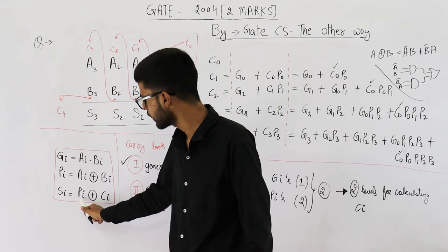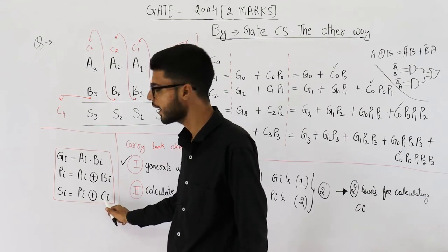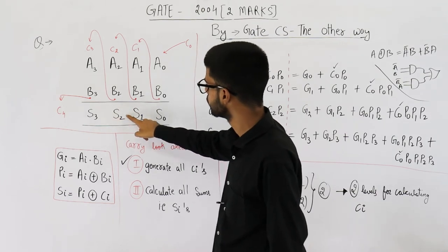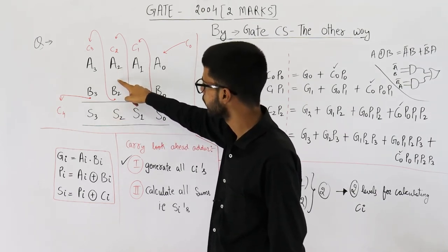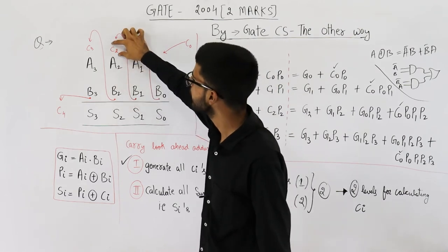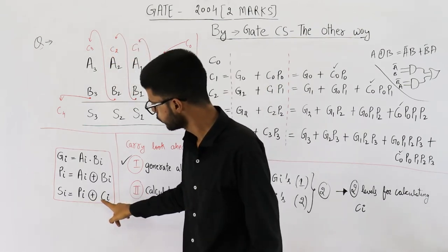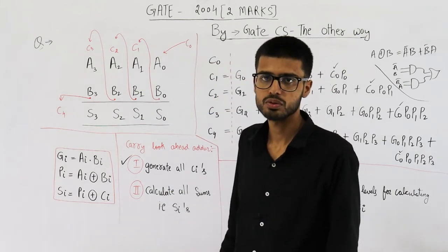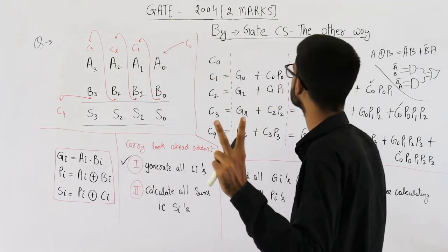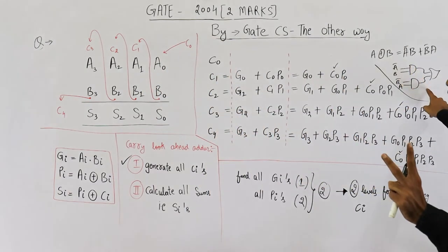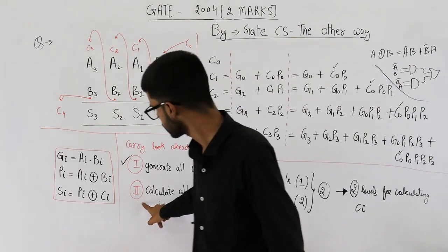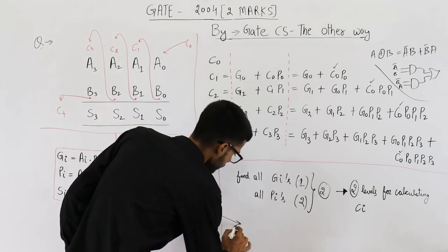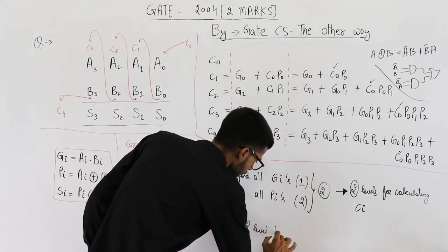Calculating the sum means performing XOR of P_i and the carries we calculated. For example, sum S2 is P2 XOR C2. That would be just one gate, but we cannot use an XOR gate, so it has to be implemented using two levels of logic. Therefore, this step will again need two more levels.